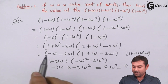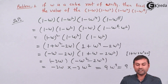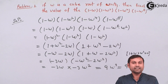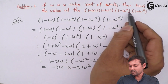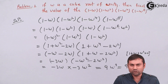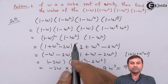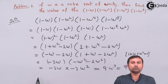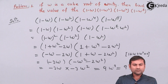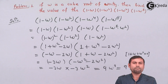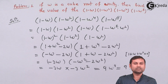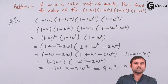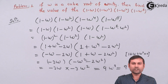So the value is 9. If you had tried to directly multiply everything out, it would have become very complicated. By using the properties of cube roots of unity, we solved the problem easily. Thank you.